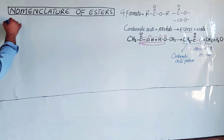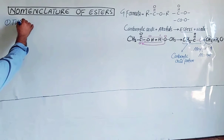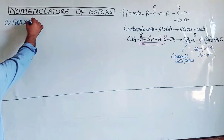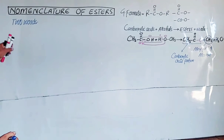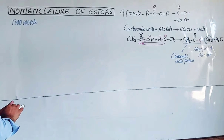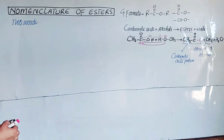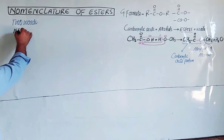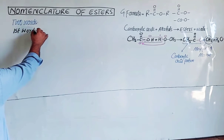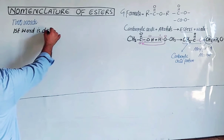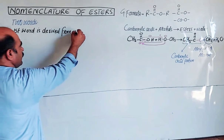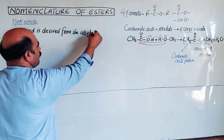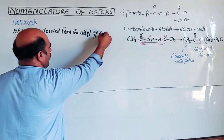Now for the nomenclature. In the nomenclature of esters there are two words. The first word is derived from the alkyl group of the alcohol.